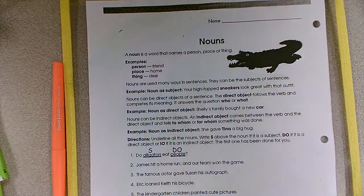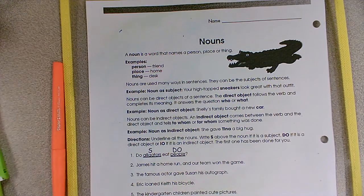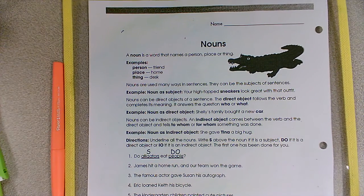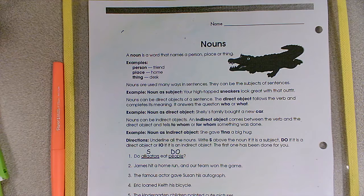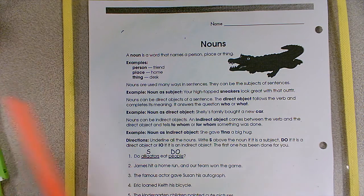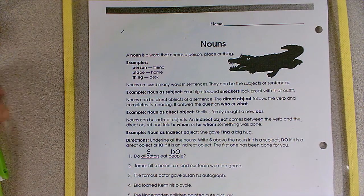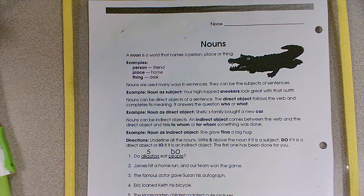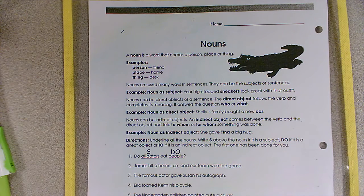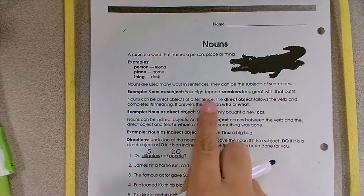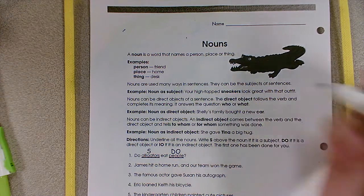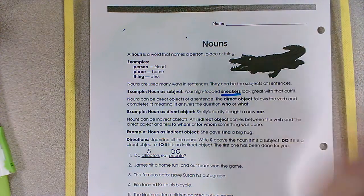Nouns can be used in many different ways in our sentences. They can be what's called a subject of a sentence. The subject of a sentence tells us who or what is doing the action, who is doing the verb. So high-top sneakers look great with that outfit. Sneakers is your subject.